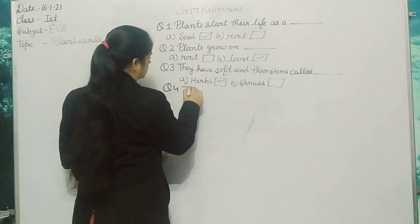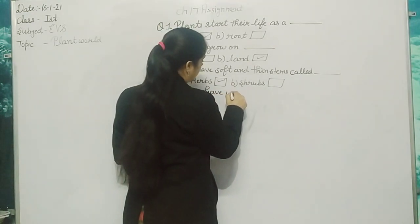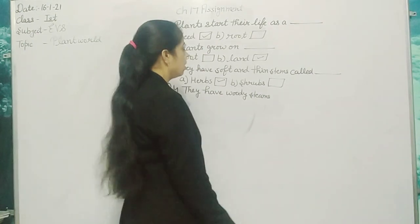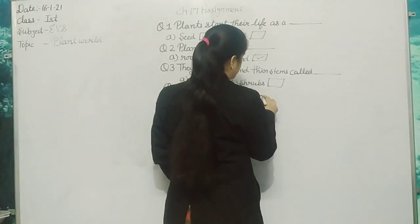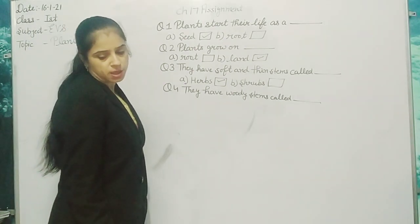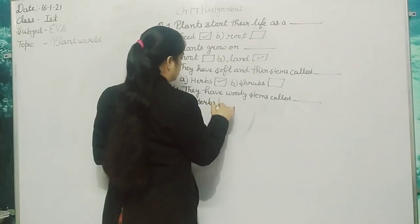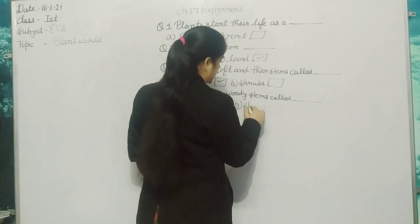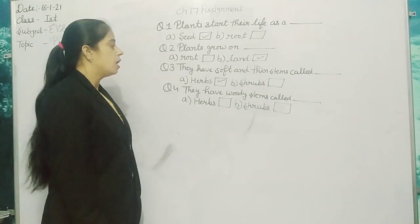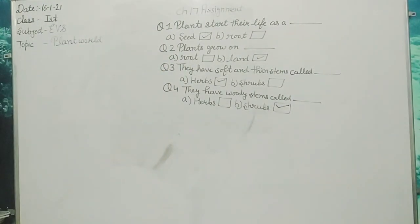Question 4: They have woody stems, called dash — herbs or shrubs? Option A: herbs. Option B: shrubs. They have woody stems — herbs or shrubs? Shrubs. Mark it on shrubs. Write it down.